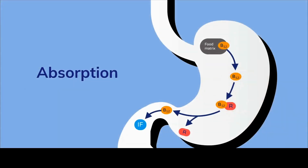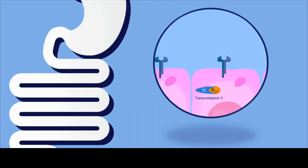In the stomach, B12 is released from the food matrix when we consume animal products, which are the only natural source of this vitamin. The B12 is bound to proteins, so that complex requires breakdown by stomach acid and pepsin. It then binds to transcobalamin 1, also called the R protein, which carries it into the duodenum where it's released by pancreatic enzymes. B12 then binds to intrinsic factor, generated from gastric parietal cells, which must be present in sufficient amounts for proper absorption.